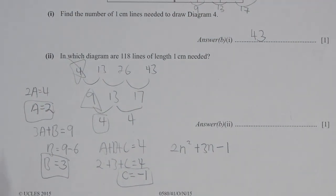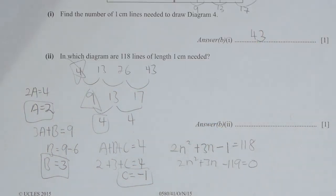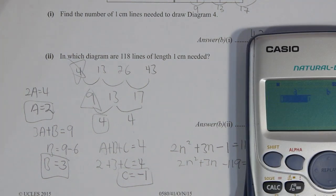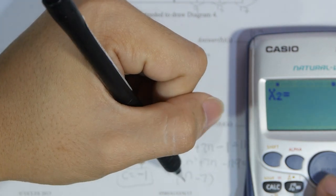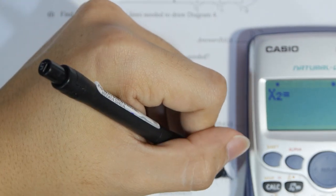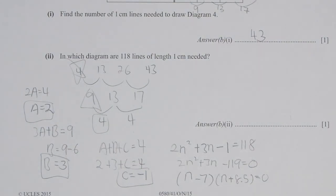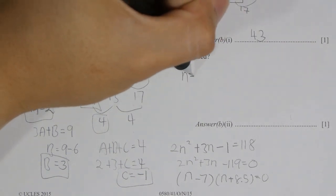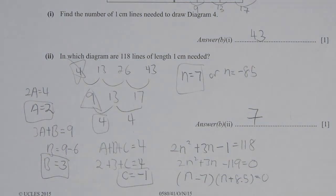For which diagram is the count 118? Include it in the calculation: 2n² + 3n minus 1 equals 118. After rearrangement, I get 2n² + 3n minus 119 equals 0. Factorizing gives n equals 7 or n equals negative 8.5. Since negative 8.5 is not valid, the answer is diagram number 7.